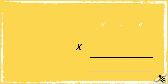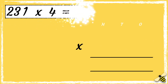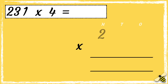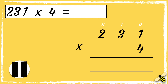Let's have a look at another one. 231 multiplied by 4. So we have 2 hundreds, 3 tens, and 1 one multiplied by 4. So now that we're set up we're ready to multiply. Pause the video to give you time to work out the answer. Press play when you're done.